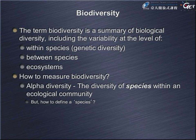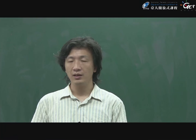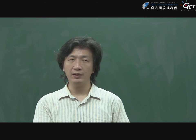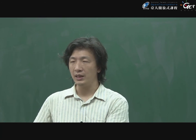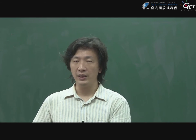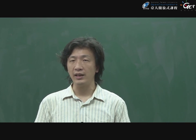But how do we really measure biodiversity? Usually when we talk about biodiversity, we mostly refer to so-called alpha diversity, which means we count the species number to measure biodiversity. For example, if area A has 10 different species and area B has 100 different species, then we say area B has a higher biodiversity than area A.